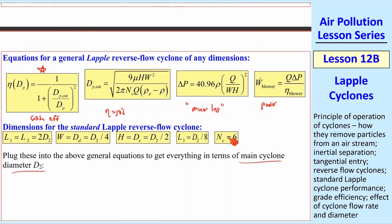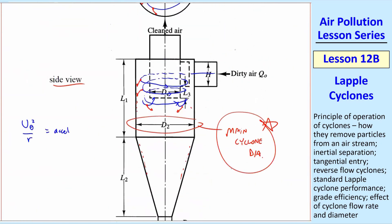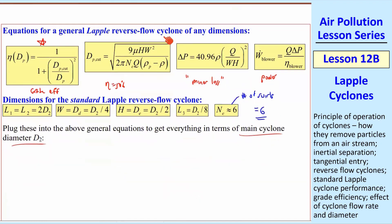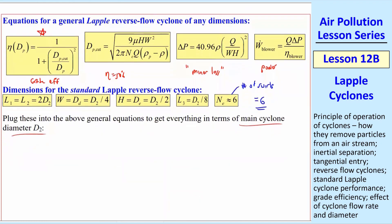Those dimensions are all shown on that diagram. NE is the number of swirls. And for a standard Lapple cyclone, it's six. So we're saying that the air swirls around six times here before it gets sucked up into the outlet. The outlet is at the top. So the flow comes in, it swirls around, it gets rid of the particles, then it gets turned up into this pipe. And that's where the outlet goes.